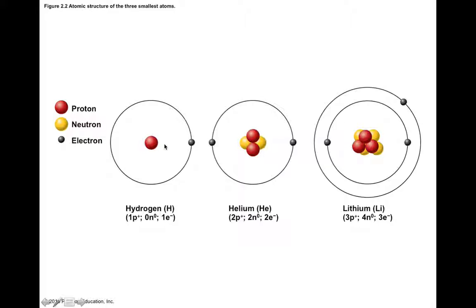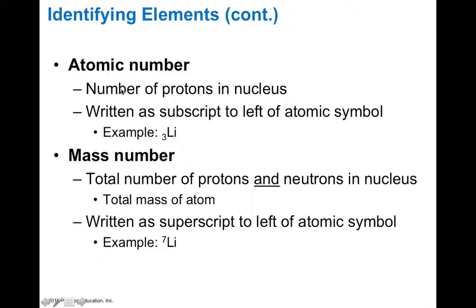Atomic number is the number of protons in the nucleus. We write this as a smaller number as a subscript next to our atomic symbol. So we say that lithium is atomic number three. Mass number refers to the total number of protons and neutrons in the nucleus. This gives us an idea of the total mass of the atom. It's written as a superscript next to the atomic symbol. So we see that lithium, which is the third element, has an atomic mass of seven, because you have three protons and four neutrons.